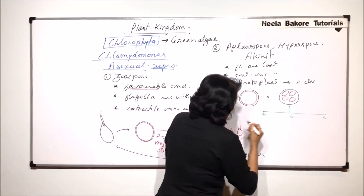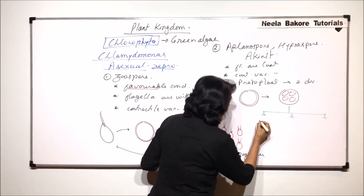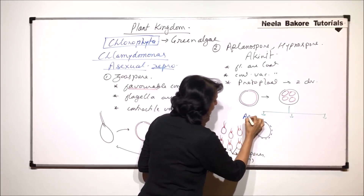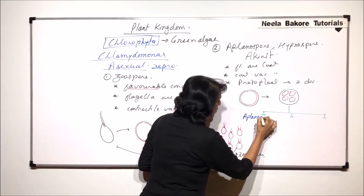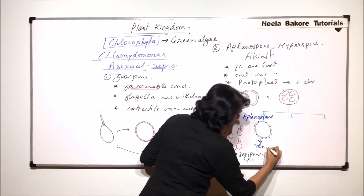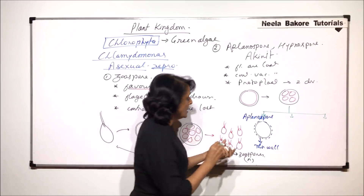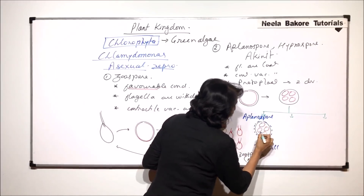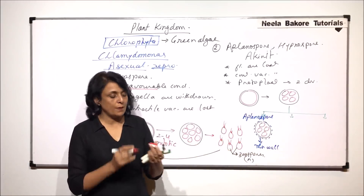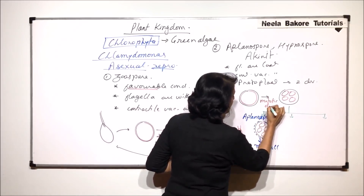If outside the cell wall there is a very thin layer secreted around the spores, then those spores are known as aplanospores. This thin wall helps the structure survive in adverse conditions. The inner parts are again haploid, because the division which has taken place is mitotic here also.